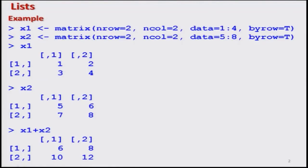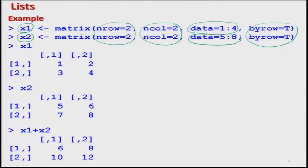Now we continue with our lecture and take some examples to understand more about the list command. I have constructed here two matrices: one denoted by x1 and another by x2. These are 2 by 2 matrices — number of rows and columns are 2 in both cases, data arranged by rows. The only difference is that matrix x1 takes a sequence of 1 to 4, and matrix x2 takes a sequence of 5 to 8.